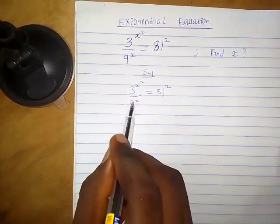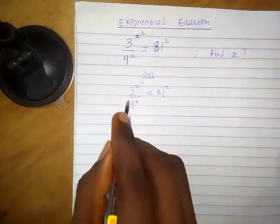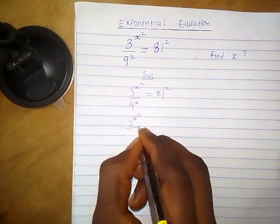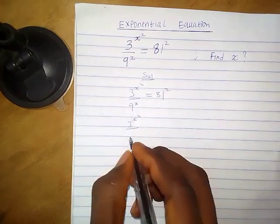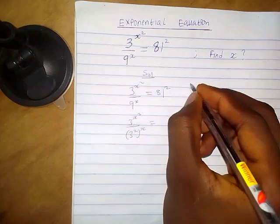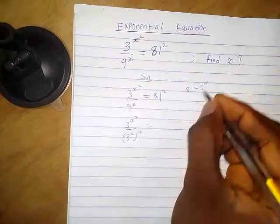Let's write each term in terms of base 3. On the numerator that remains unchanged. We can write 9 as 3 squared. So we have 3 raised to the power 2 times x. 81 is the same thing as 3 raised to the power 4.